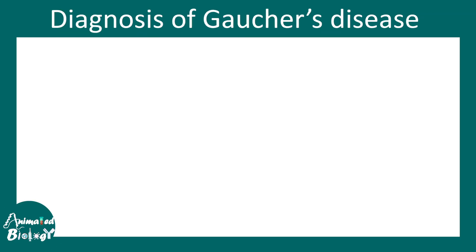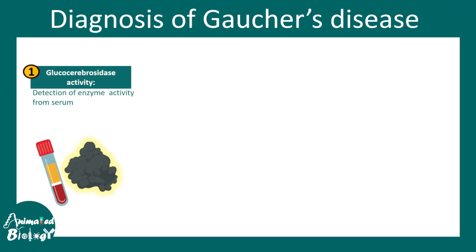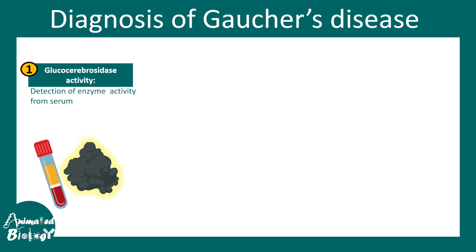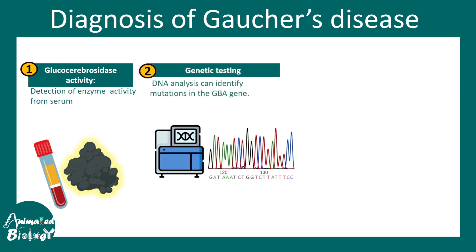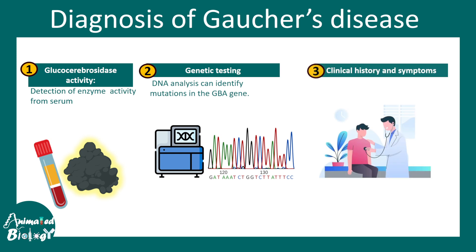For diagnosis of Gaucher disease, glucocerebrosidase activity measured from patient serum is one diagnostic test. Genetic testing looking for GBA gene mutations is confirmatory. Clinicians also evaluate the patient's symptoms to get an overall picture of disease progression.